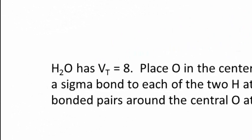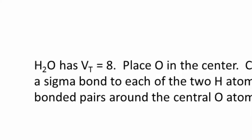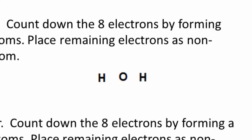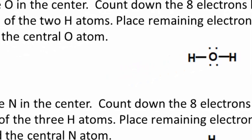Let's go to water, H2O. Between oxygen and hydrogen, the atom that goes in the middle is oxygen — hydrogens can never go in the middle. Adding up VT: six for oxygen plus two times one for hydrogen gives eight total valence electrons. We place oxygen in the middle and count down from eight, forming sigma bonds between the oxygen and the two terminal hydrogens using four electrons, but we still have four electrons left. We place them as non-bonding pairs around the oxygen. This is the Lewis dot structure of water: a central oxygen with two sigma bonds to hydrogen and two non-bonded pairs.